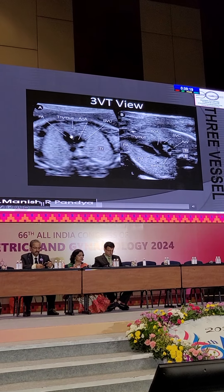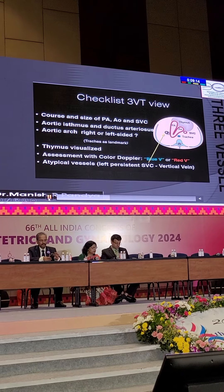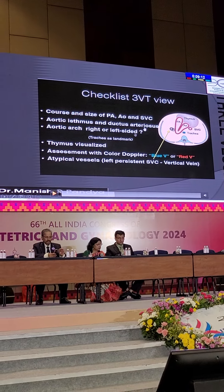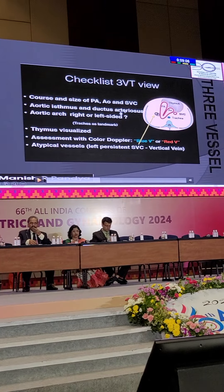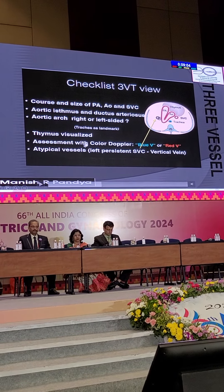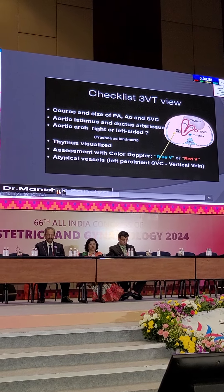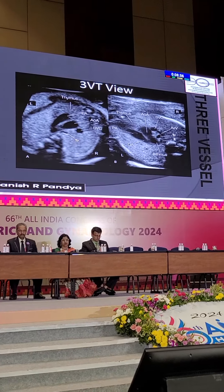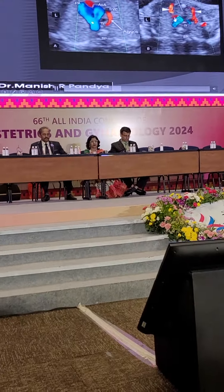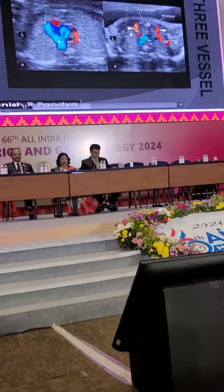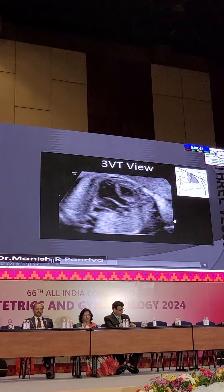This is a typical three-vessel view, and the thymus is always coming in as a bonus — we are not specifically looking at it. The checklist for the three-vessel trachea view: always see pulmonary, aorta and superior vena cava — they always decrease in size. Thymus is visualized as a bonus. If you put color, flow is seen either in blue or red, or it is inverted. Sometimes you can see a fourth vessel — that is a persistent left superior vena cava. In a typical three-vessel view, you can have an inverted V-shaped color pattern.